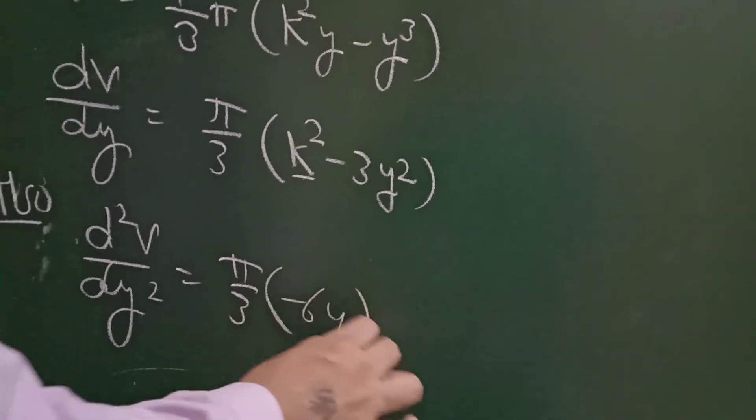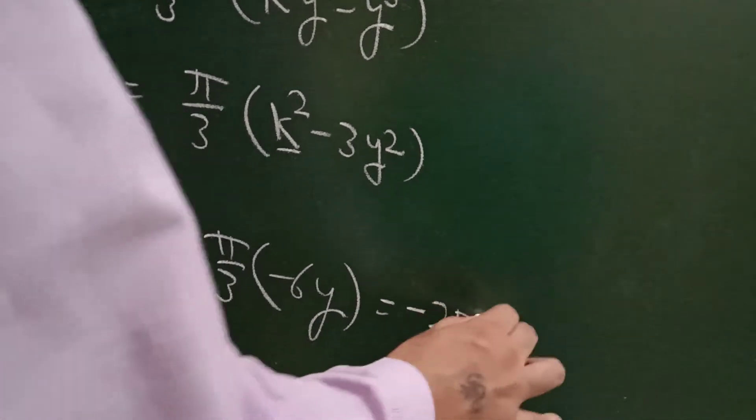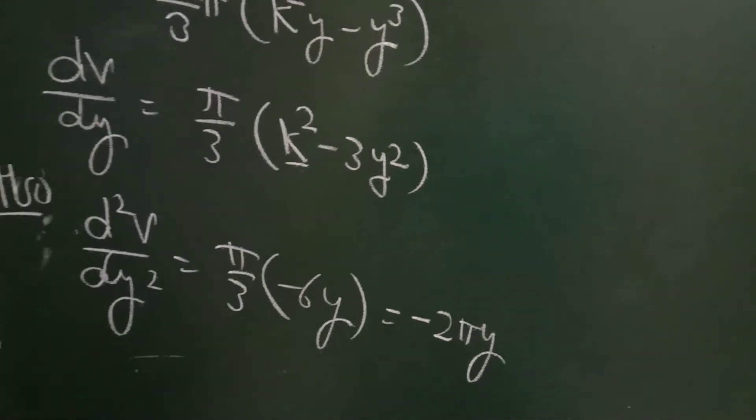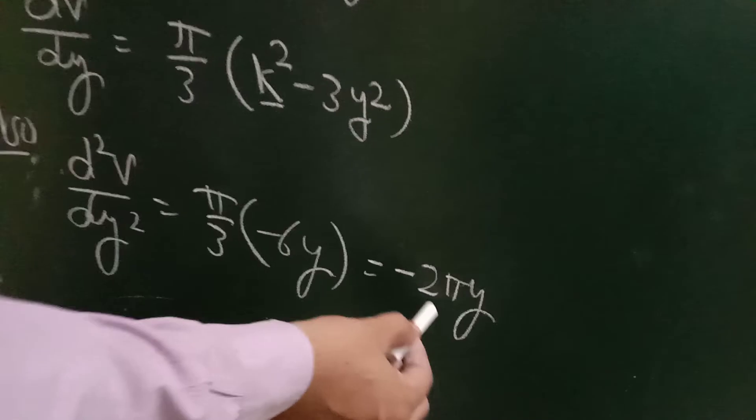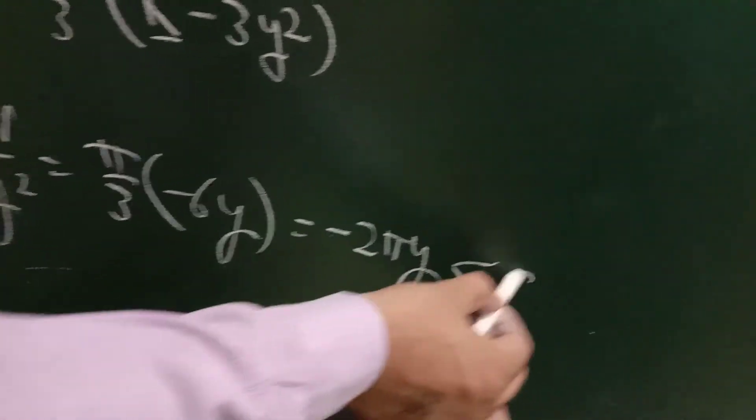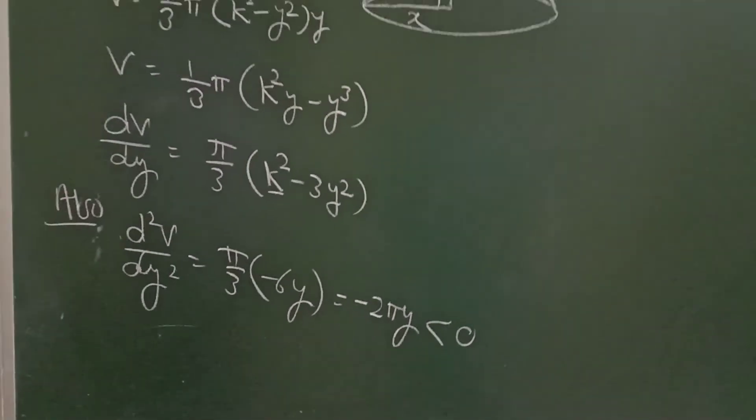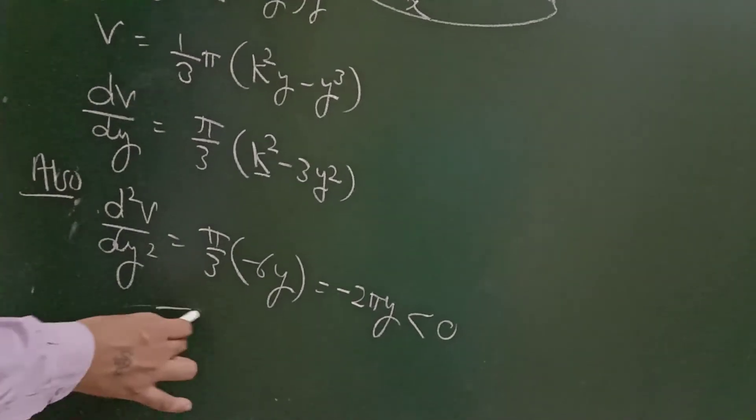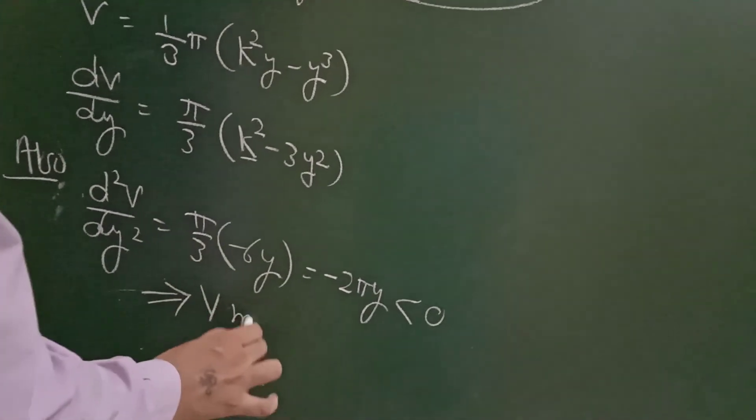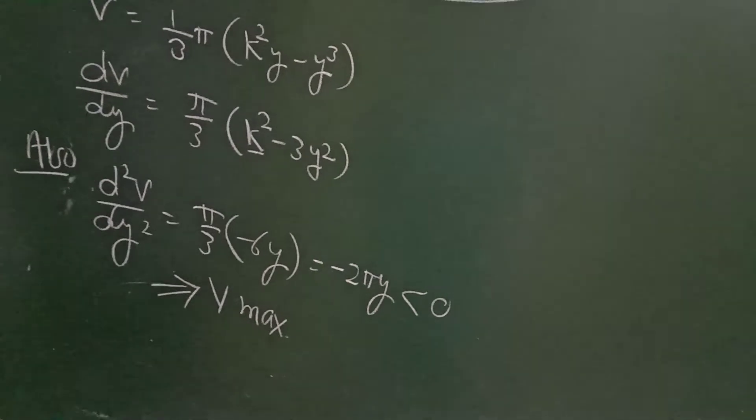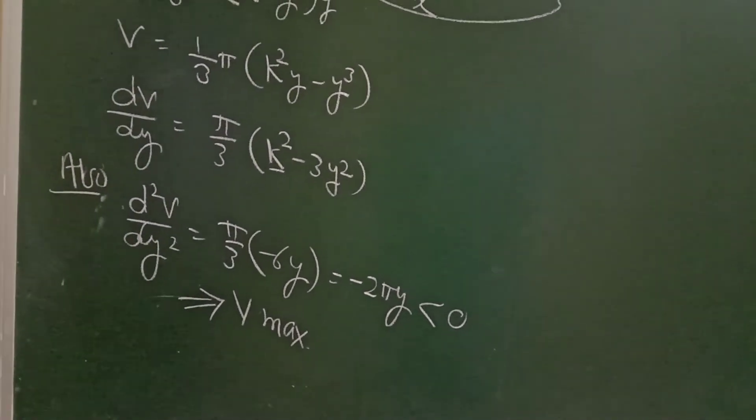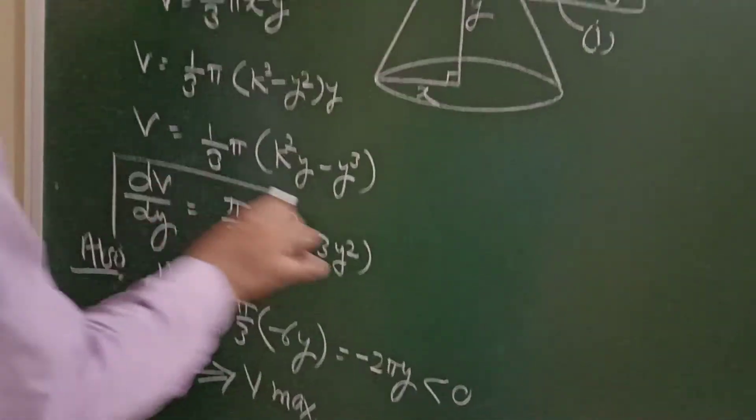...and the derivative of -3y² is -6y, so d²V/dy² = -2πy. Since y is a length (positive) and the overall sign is negative, this confirms that the second derivative is negative, which implies that the volume will be maximum. The condition for maximum is that the first derivative equals zero.